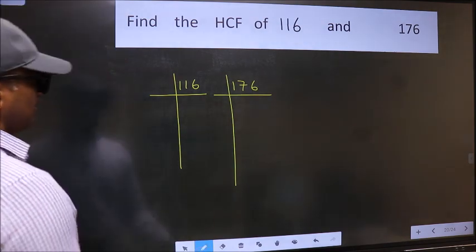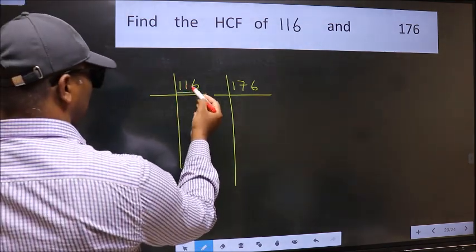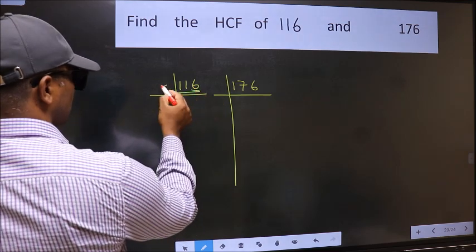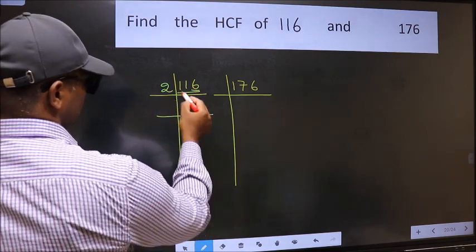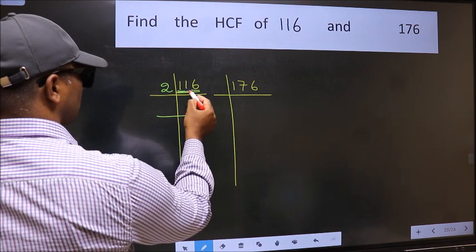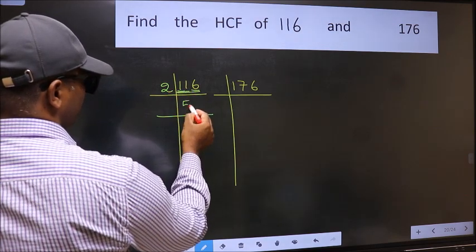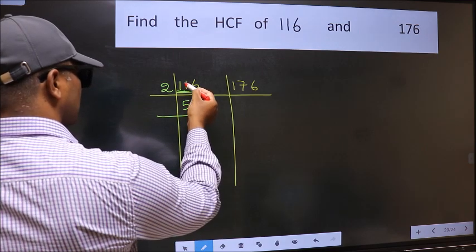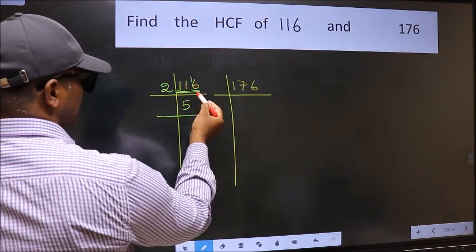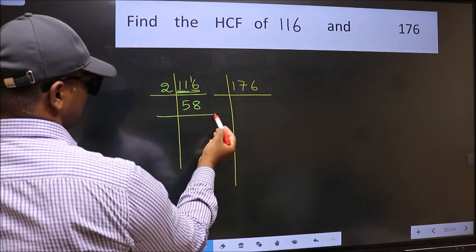Next, in this number, last digit 6, even, so take 2. First number 1, smaller than 2, so 2 numbers 11. A number close to 11 in 2 table is 2×5=10. 11-10=1, 1 carried forward 16. When do we get 16 in 2 table? 2×8=16.